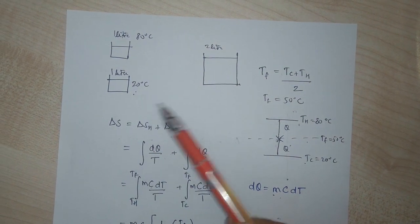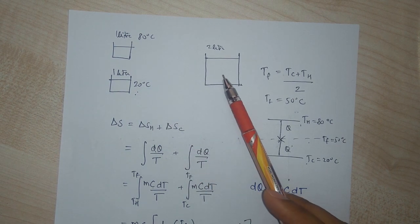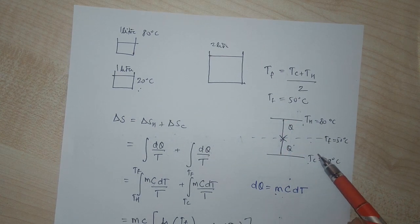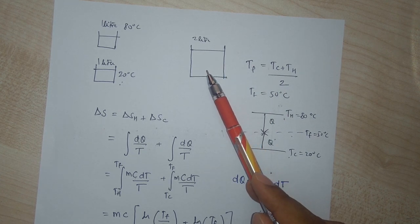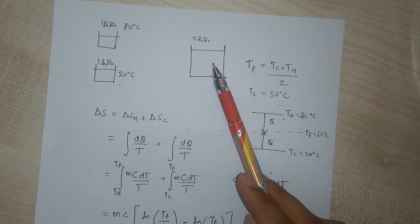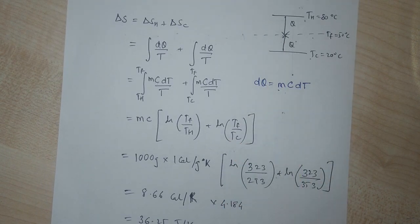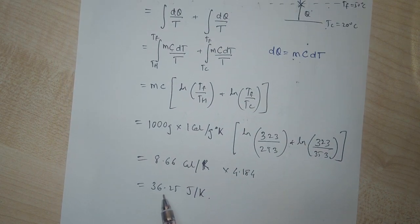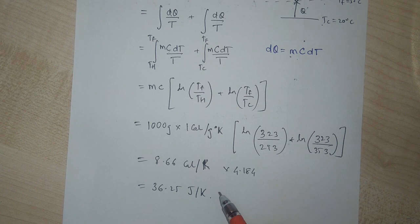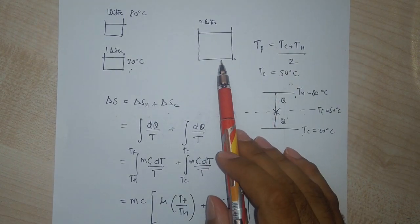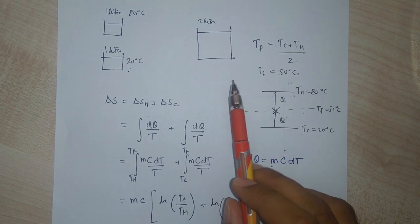If we were to play a video of this process backwards, we would see water initially at 50 degrees centigrade spontaneously separating into one liter at 80 degrees centigrade and another liter at 20 degrees centigrade. But such a process would show a decrease in entropy of the universe, which is not allowed by the second law of thermodynamics. That is the reason why it won't happen in nature.